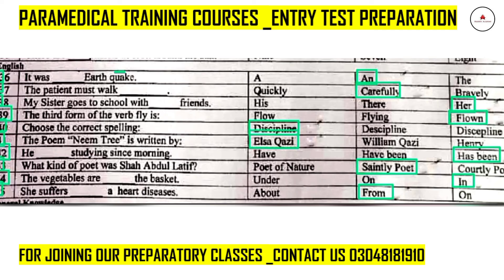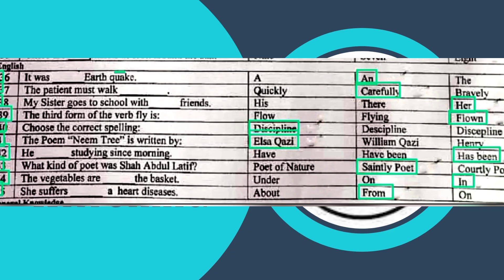Question 44: 'The vegetables are ___ the basket.' This is a preposition question — the options are under, on, and in. The correct answer is 'in': 'The vegetables are in the basket.' After that: 'She suffers ___ her disease' — 'suffers from' is correct. These 10 English questions from the syllabus are now complete. The next video will cover Physics and GK, and will be a short video.